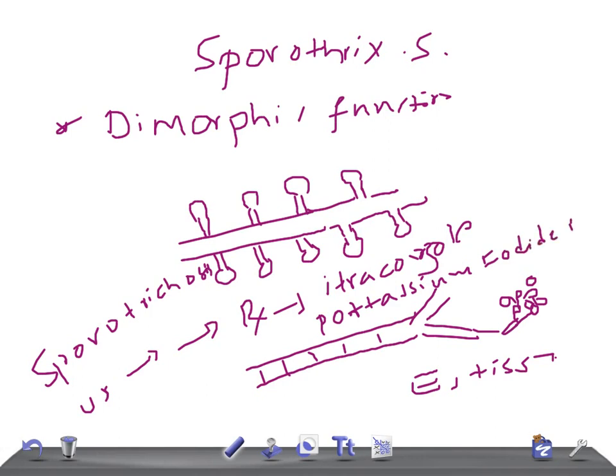It can present with pulmonary manifestation also, known as alcoholic rose gardener sleeper disease, especially in alcoholic patients. How do you treat that? Itraconazole or amphotericin B. Thank you so much for watching this video.